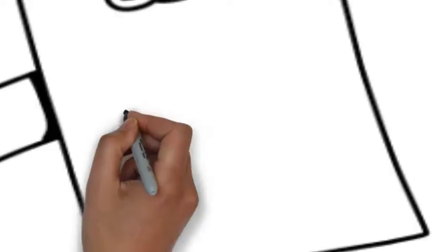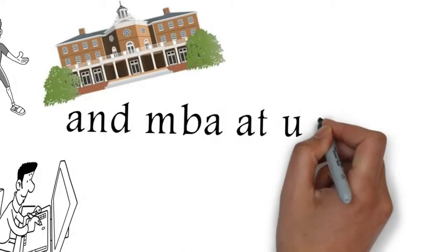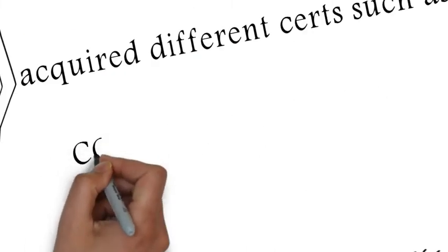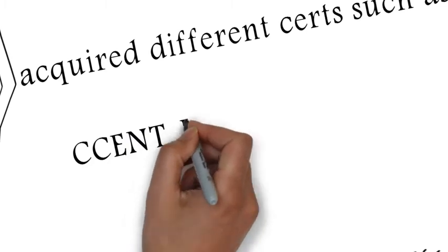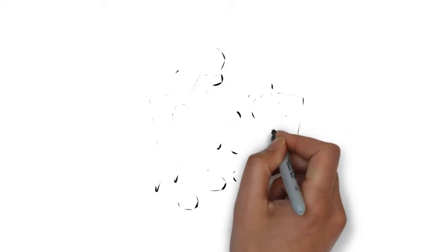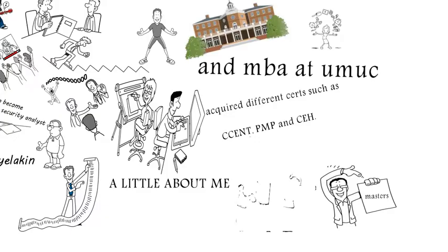Years later, I went back to school and earned my master's in cybersecurity, along with my MBA at UMUC. I have also acquired different certs, such as my PMP, my CCE&T, and the one that I'll be teaching you how to pass, the CEH. Let's see what else. Oh, family life. Well, I am married. Shout out to my beautiful wife for love and support and helped me create this awesome video book. And we have two amazing little hackers. I mean, daughters.